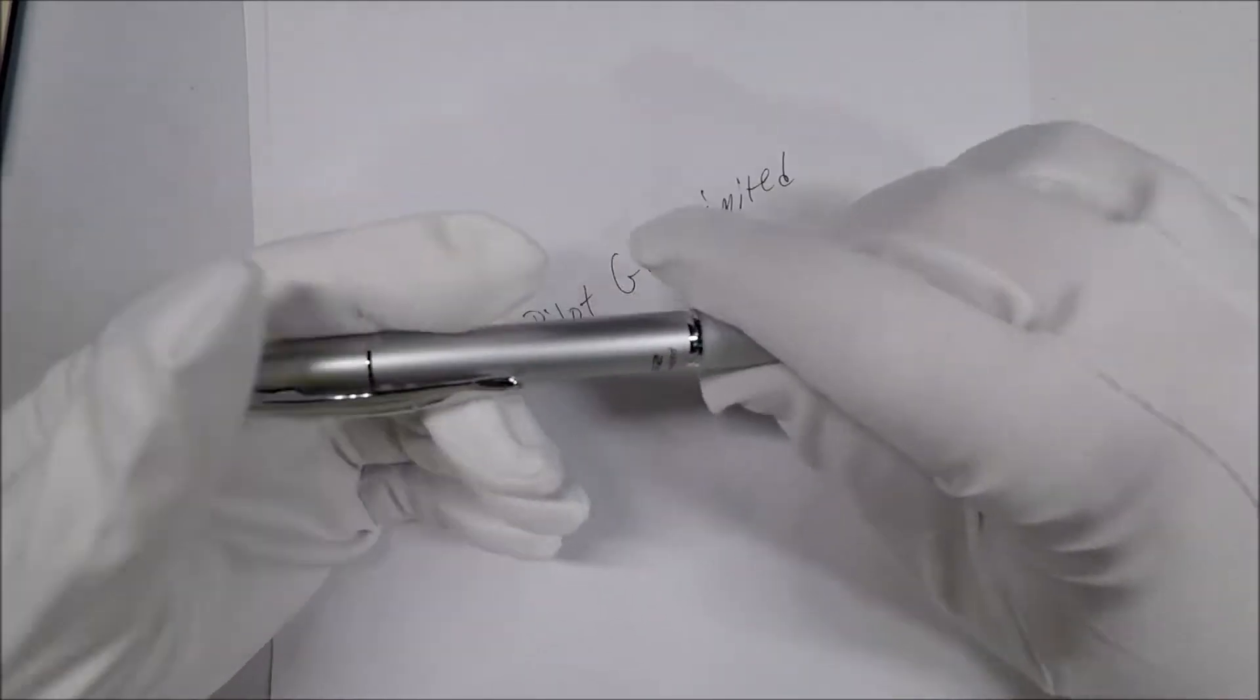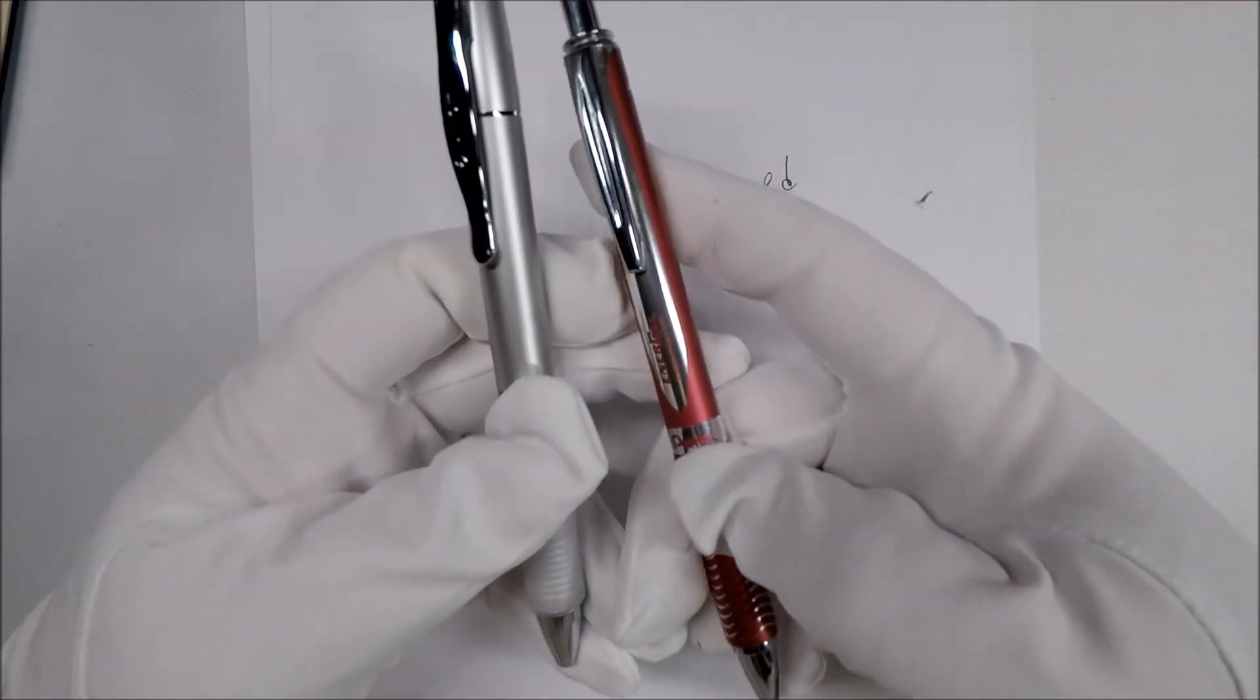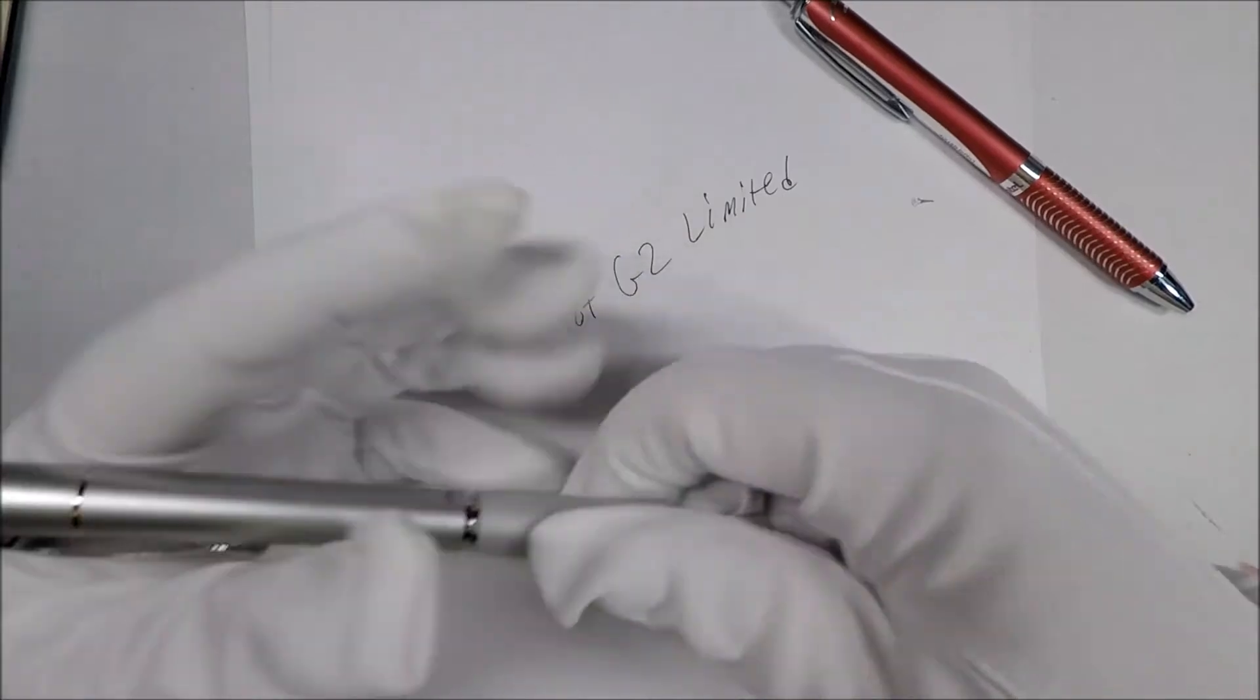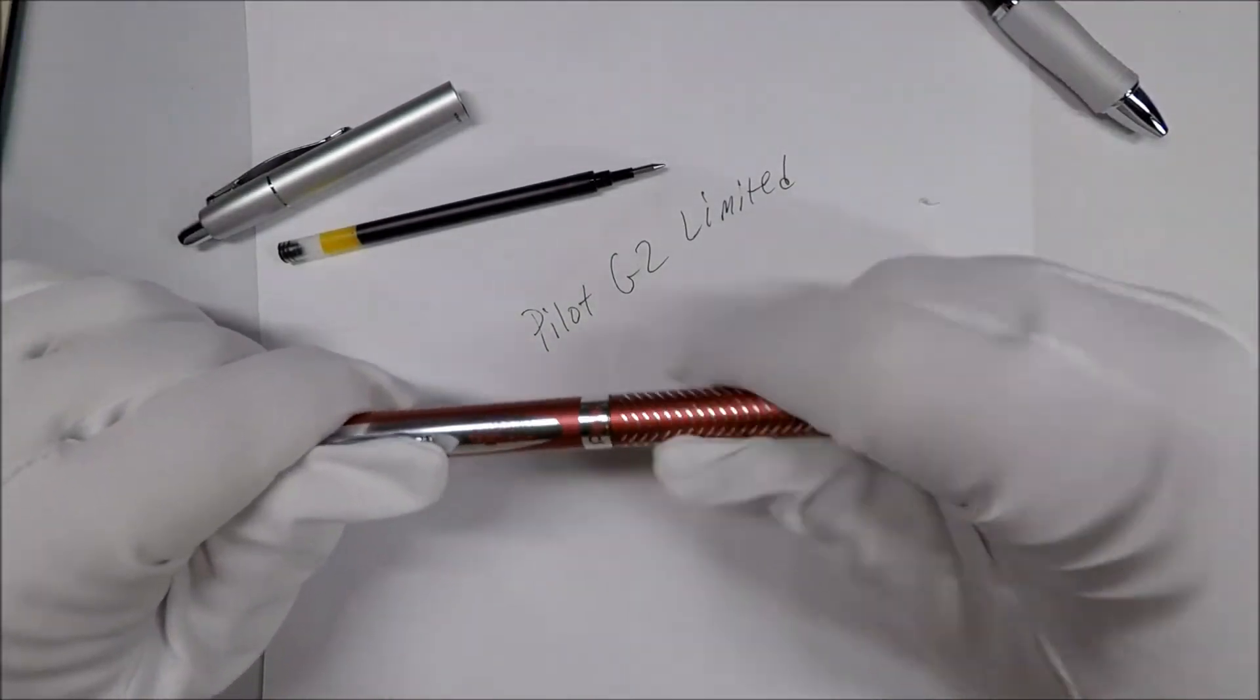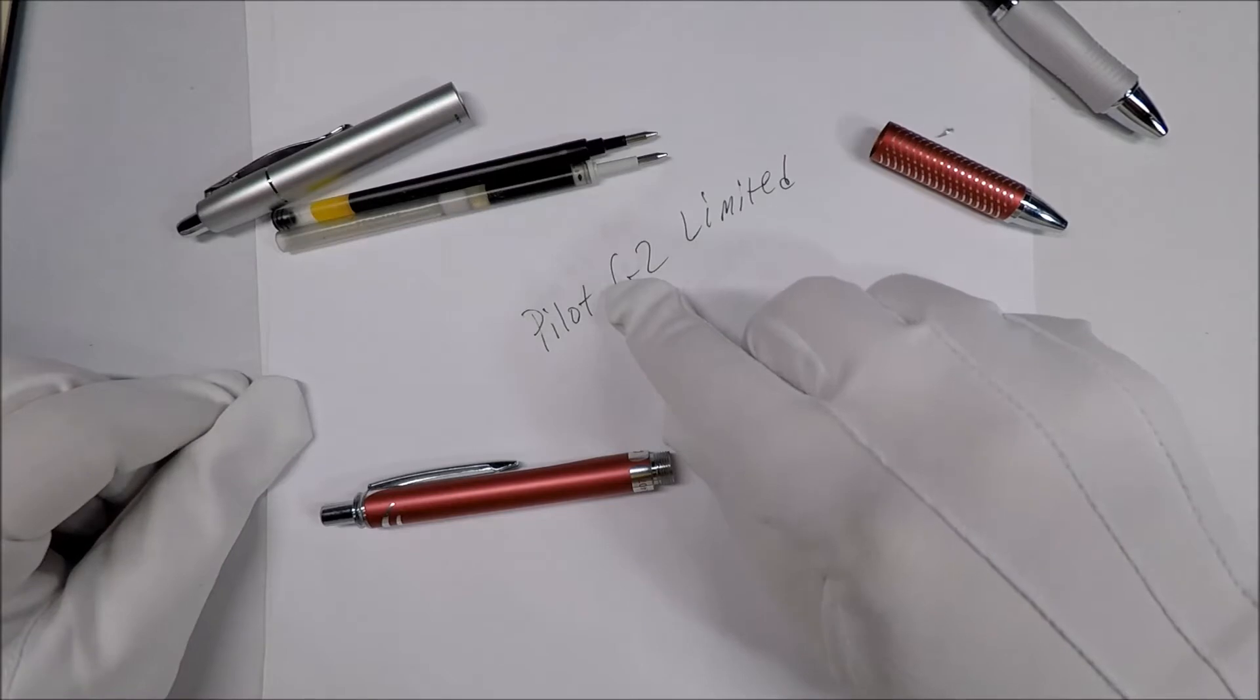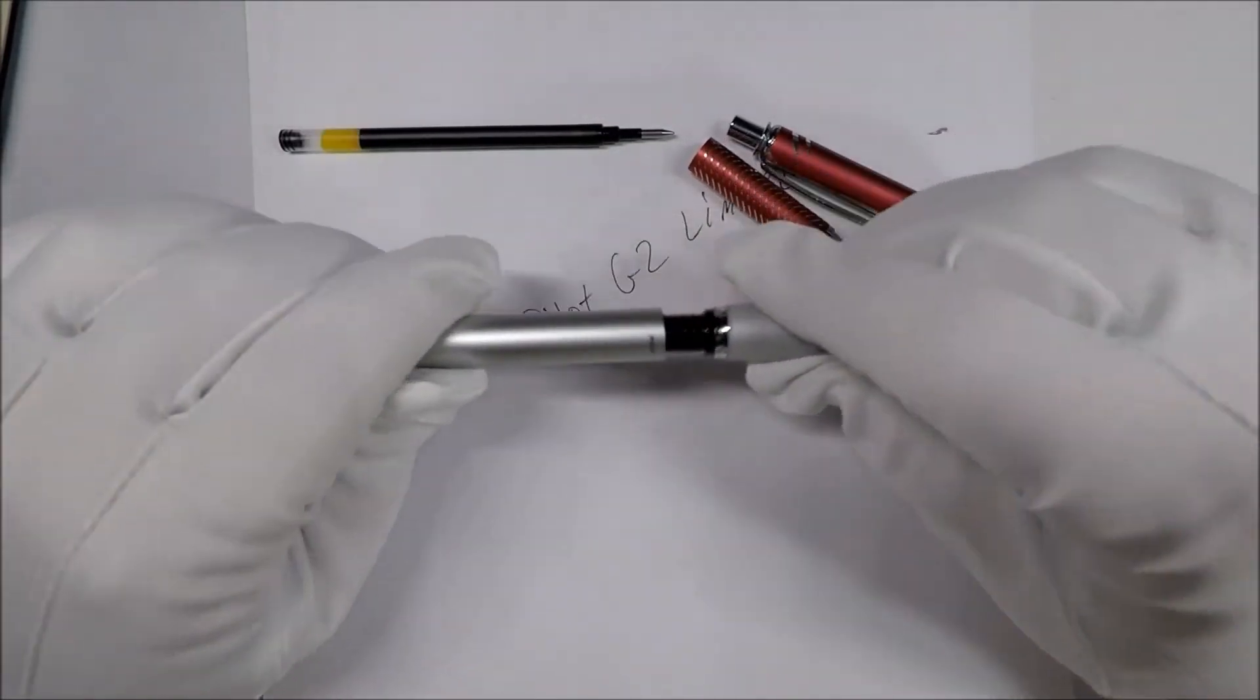So here's a big question. Probably the closest competitor for this would be the Pentel Energel. That would probably be the closest direct competitor, and in this case the alloy. Here's a question: let's say I like one of these, the ink, and I like the body of the other. Can we interchange them? Let's see. I'm curious now. So this is a Pentel Energel refill, and we'll try it out in the G2 body.